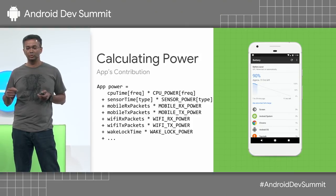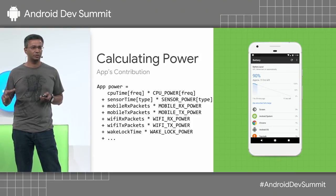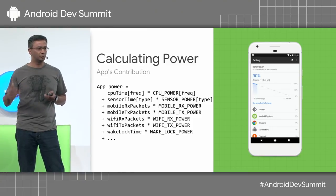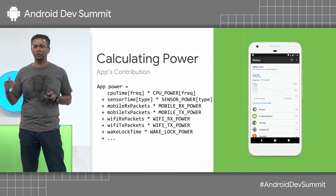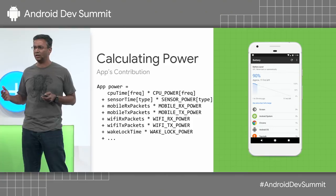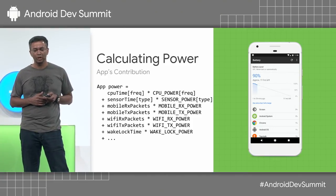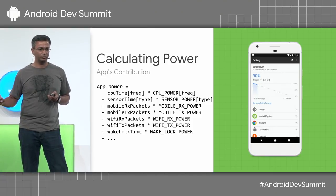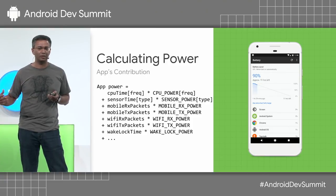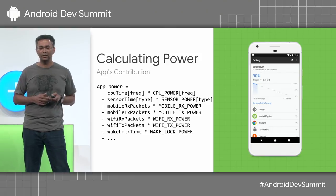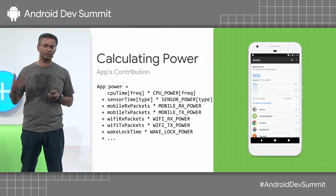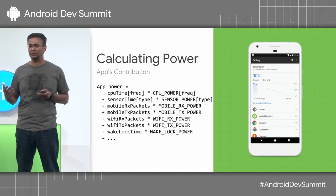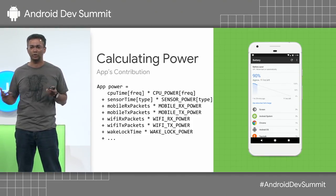At runtime, there's a subsystem called BatteryStats. It tracks what each app is doing — measuring how long it's consuming each resource, like how much CPU time at what frequency, how many data packets it's transferring, and so on. We take those values and multiply with the power cost for each of those in the power profile. We get an approximate estimate of how many milliamp-hours the particular app has drained. Then we rank all the different apps based on their consumption and present it to the user so they can see in settings what's really draining their battery.